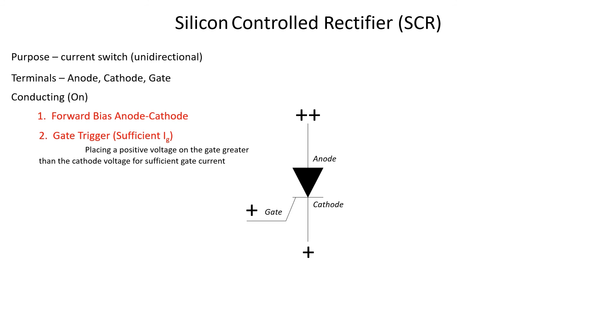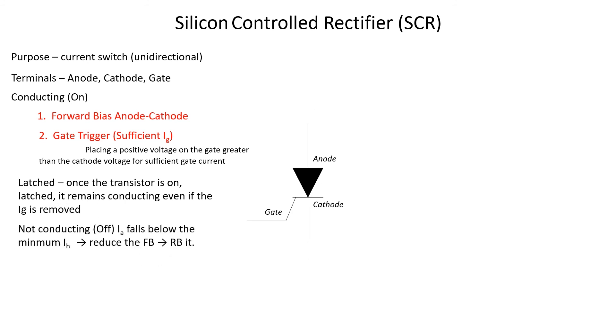Once an SCR conducts, it is latched in and will no longer require gate current. But how do we unlatch it? Well, we do this by causing the anode current, or IA, to fall below the minimum holding current, or IH.